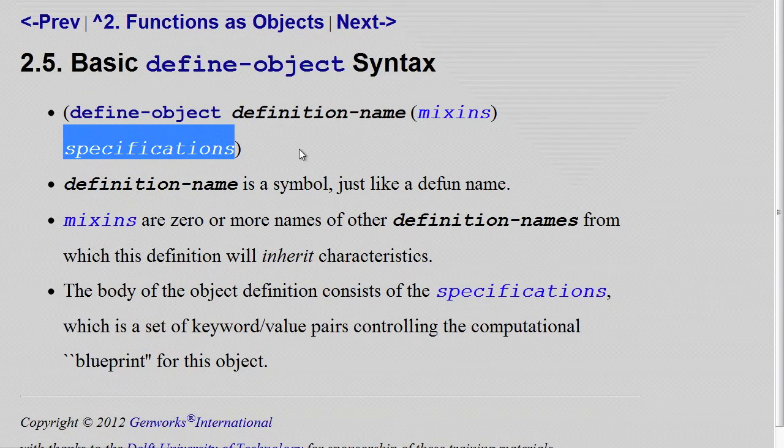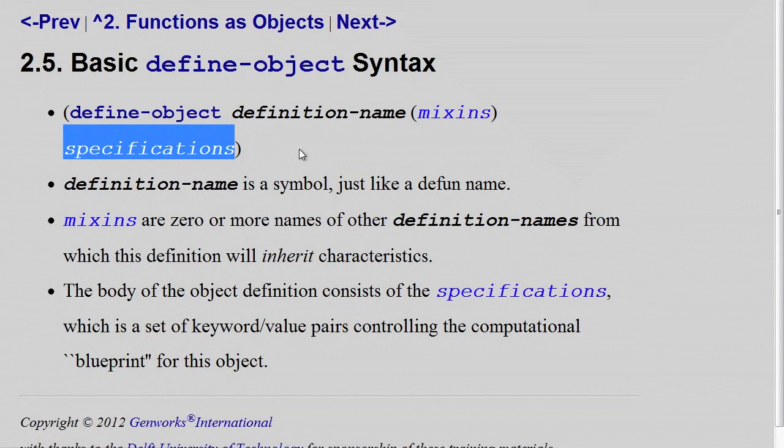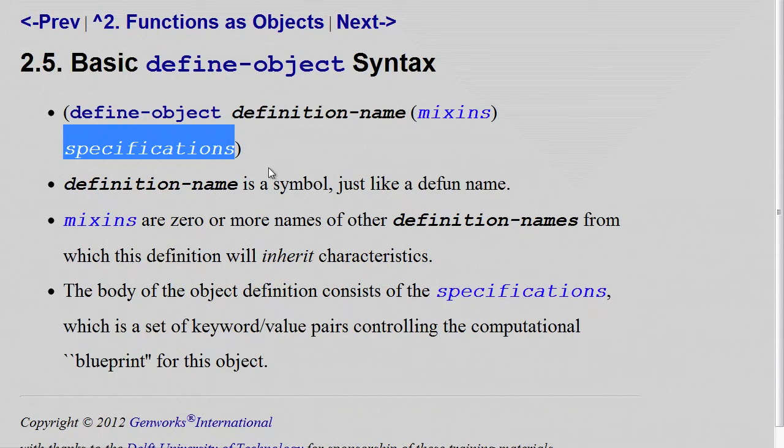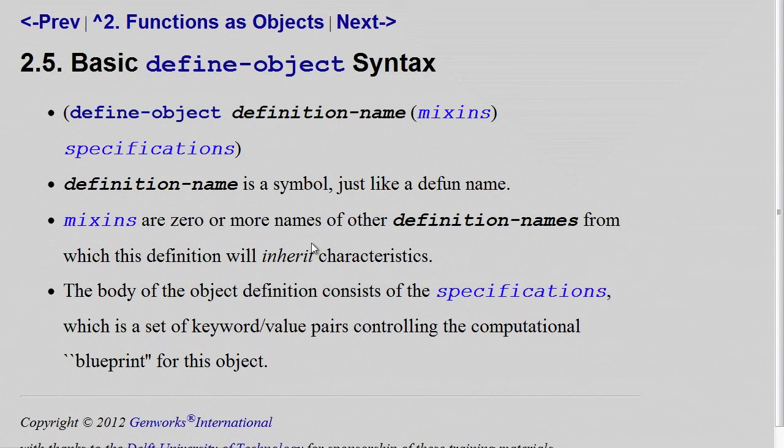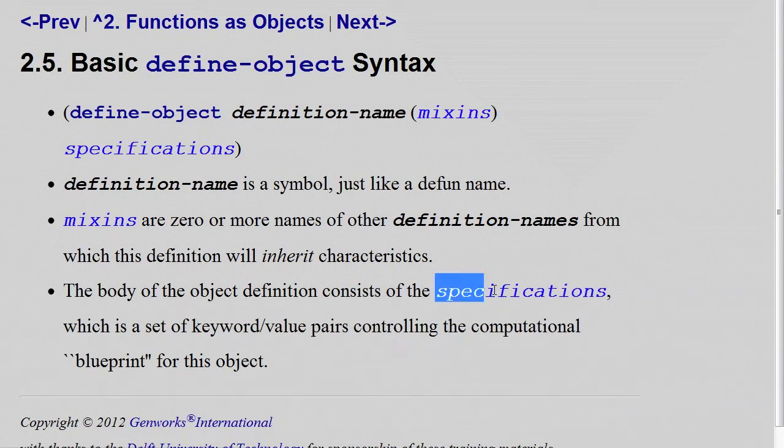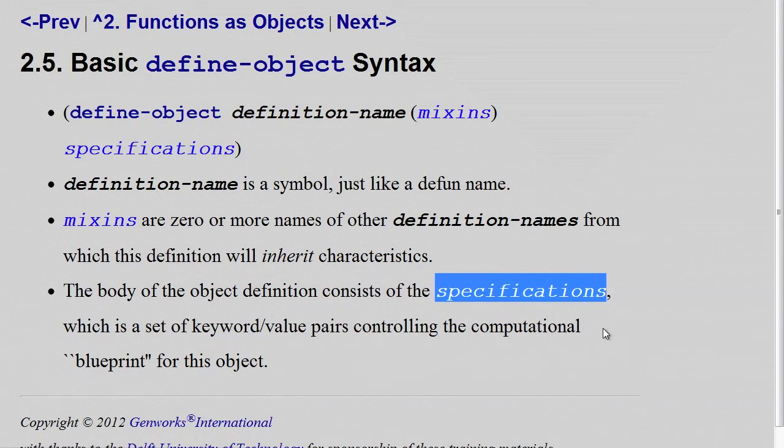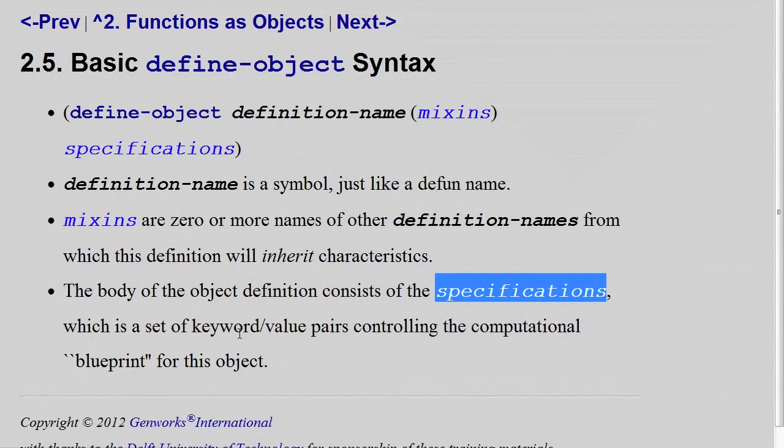Specifications make up the meat of the object definition. The definition name is a symbol. Mix-ins is zero or more names of other definition names. And the body is the specifications. And these are keyword-slash-value pairs. And you'll see exactly what that is soon.